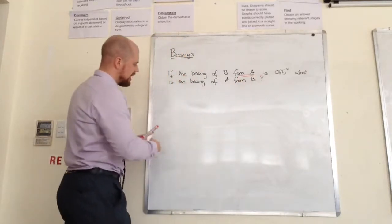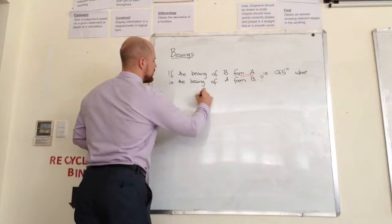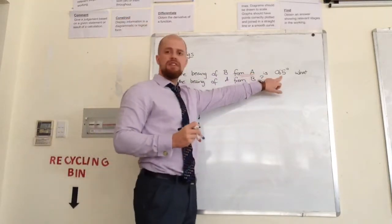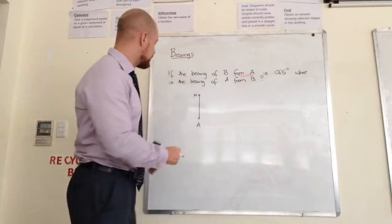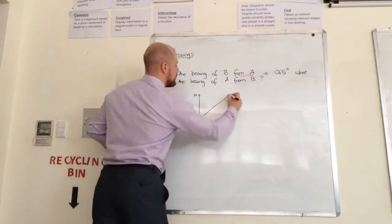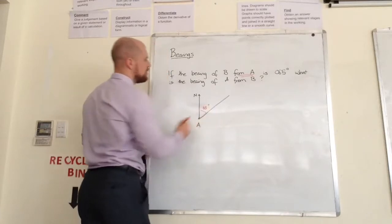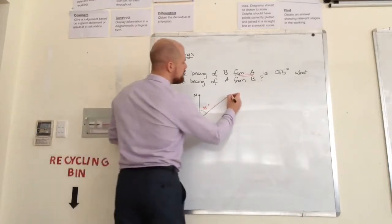So if I put A here and I draw a north line, what I'm going to do is measure a 65 degree angle. Well, I'm not going to measure it, I'm going to sketch it. I'm going to put a 65 degree angle on here, that being 65 degrees. That would mean that B is here somewhere.